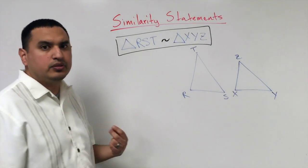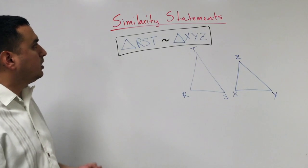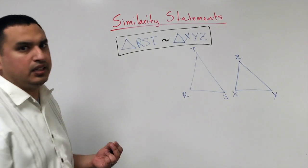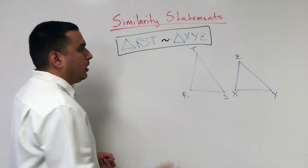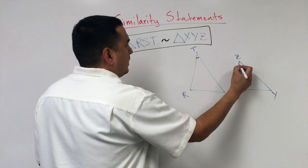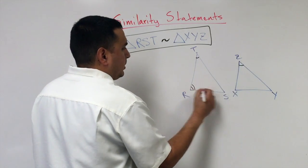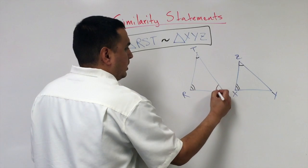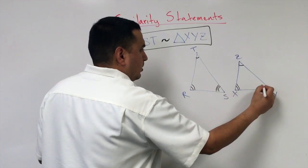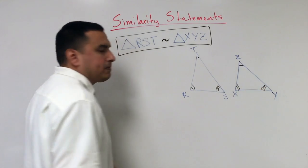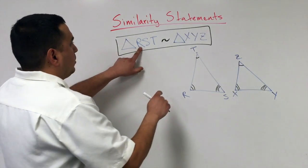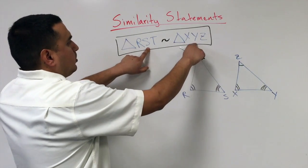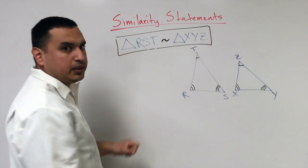If you have two shapes that are similar, the angles are the same. Angle T is congruent to angle Z, R is congruent to X, and S is congruent to angle Y. The angles match up and the order matters. R corresponds to X, S corresponds to Y, and T corresponds to Z.